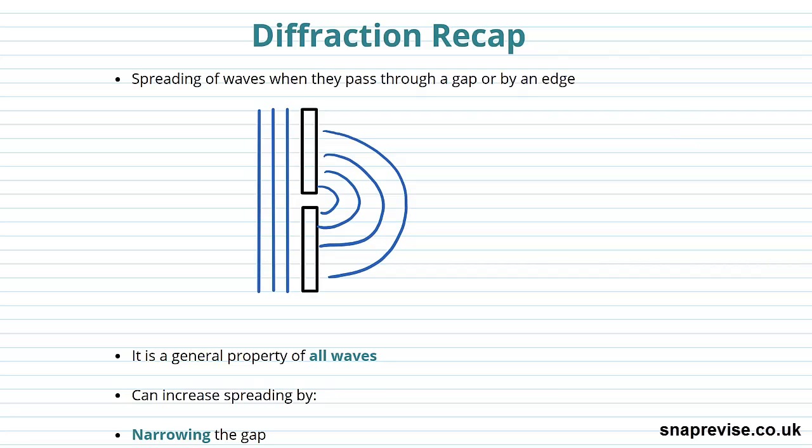So let's start just by recapping diffraction. What is diffraction? Well, diffraction is just a spreading of waves when they pass through a gap or by an edge, and we can see that detail below.